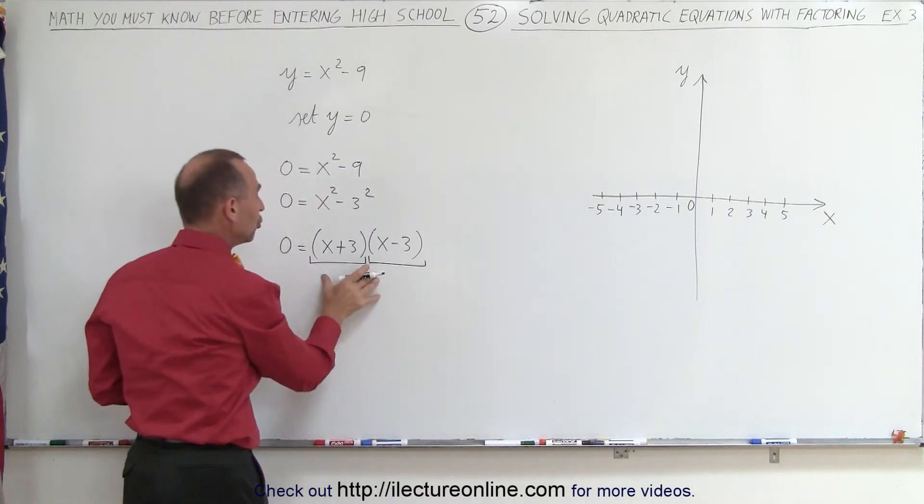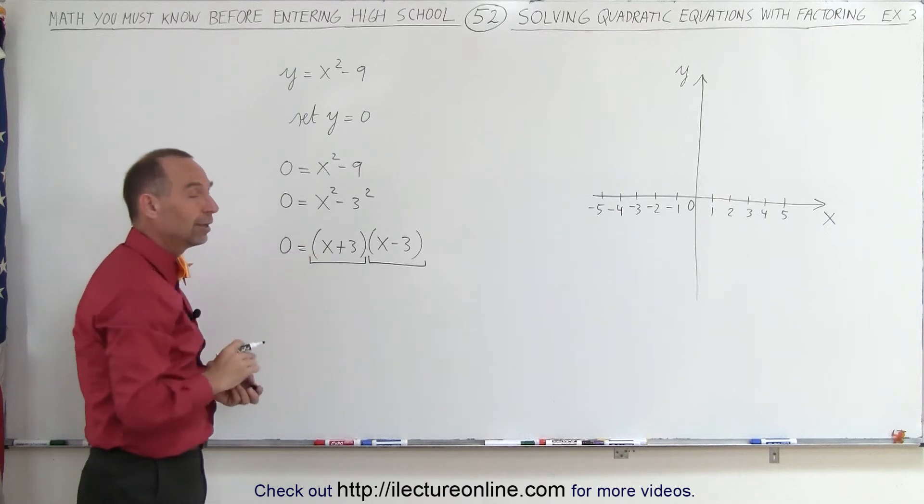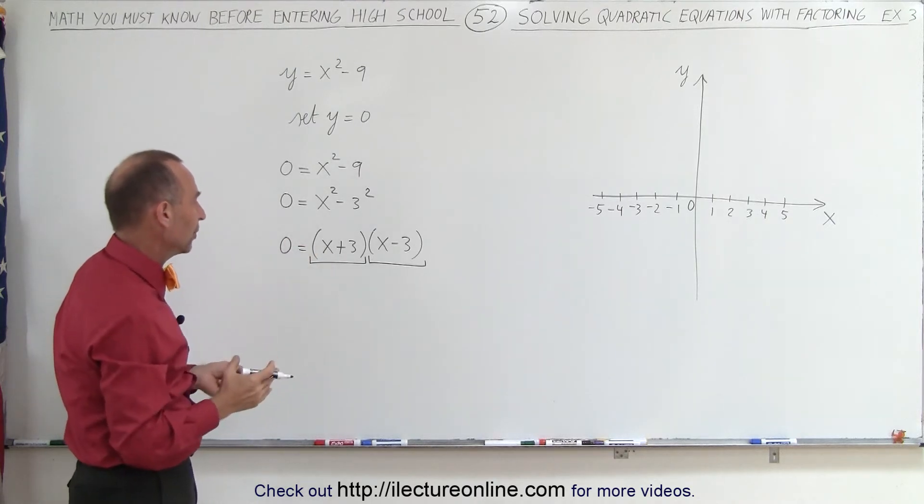And in order for two items, two quantities, to be multiplied together and give 0, that means either one or the other must be 0.